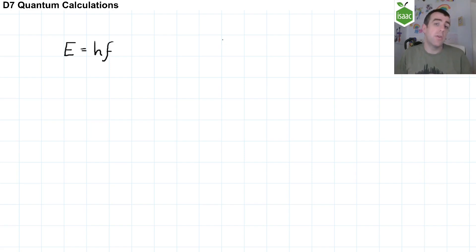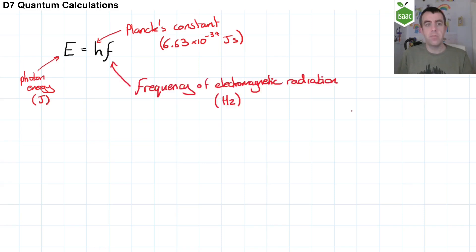The energy of a photon can be calculated with the formula E equals HF, where E is the energy of the photon in joules, H is Planck's constant, which is, to three significant figures, 6.63 times 10 to the negative 34 joule seconds, and F is the frequency of the electromagnetic radiation in Hertz.